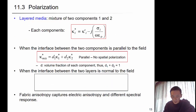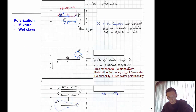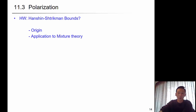In layered media, when the interface between two components is parallel to the field, the parallel model applies with no spatial polarization. When the interface is normal to the field, there is a series model called Maxwell relaxation. The mixture theory discussed for conduction and magnetic permeability can also be applied to this permittivity model.